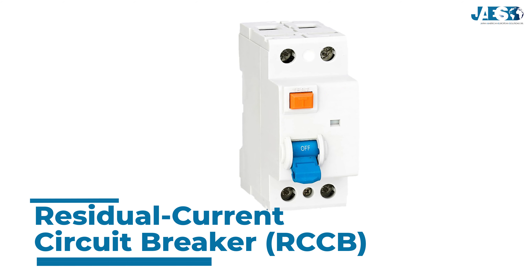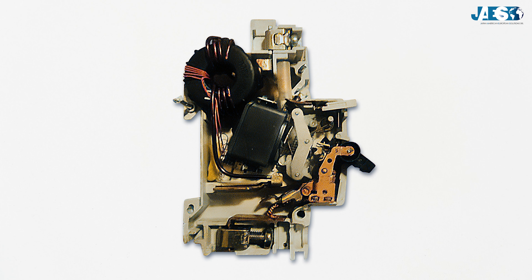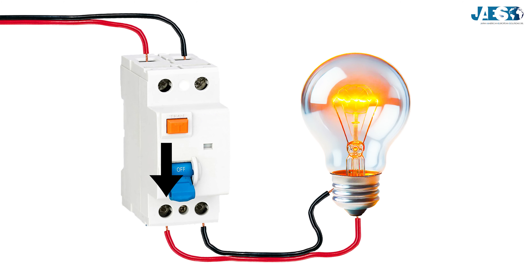The residual current circuit breaker, or RCCB, commonly known as a circuit breaker, is a protective device that disconnects the electrical circuit when it detects a leakage current to the ground. This means the RCCB is designed to protect people from electrical shocks.